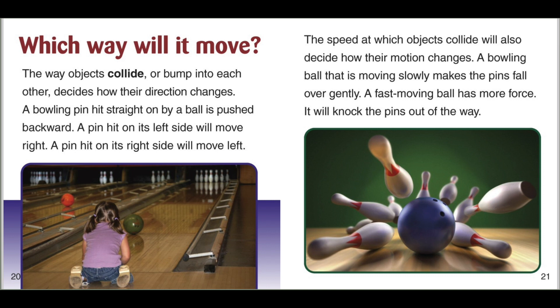The speed at which objects collide will also decide how their motion changes. A bowling ball that is moving slowly makes the pins fall over gently. A fast moving ball has more force. It will knock the pins out of the way.